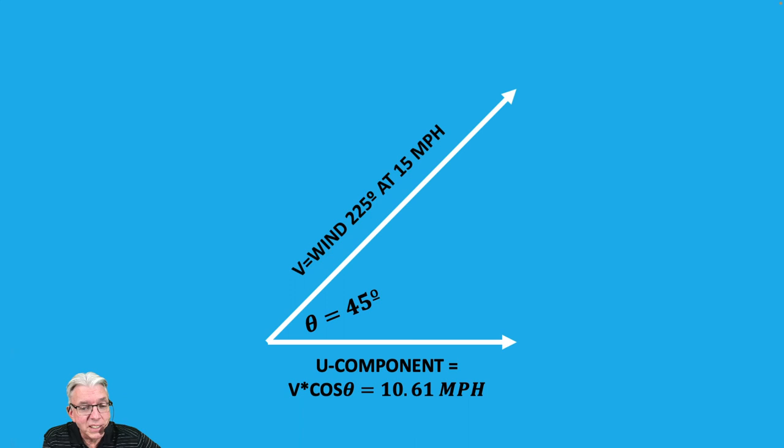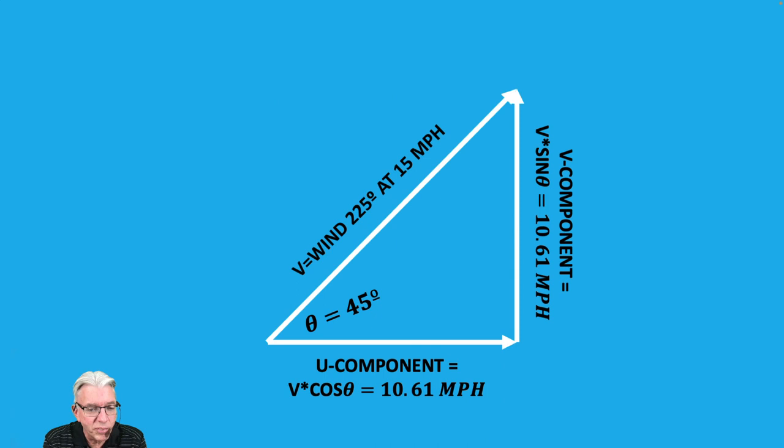The V component is going to be exactly the same in terms of magnitude because the sine of 45 degrees is also 0.707, and so you end up with 10.61 miles per hour for the V component, which goes from south to north. By splitting the wind up into these two components, it makes it easier to do some other calculations, which we'll get to right now.